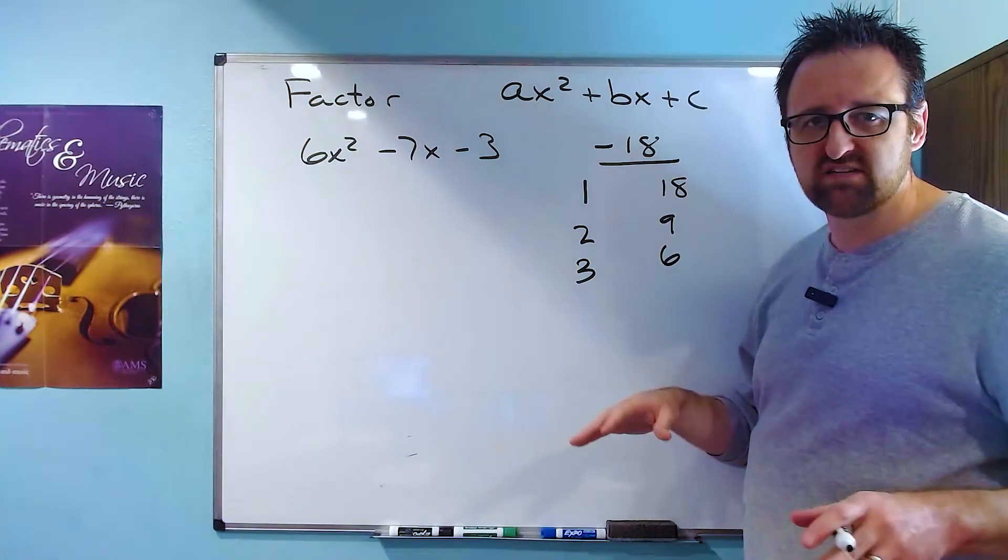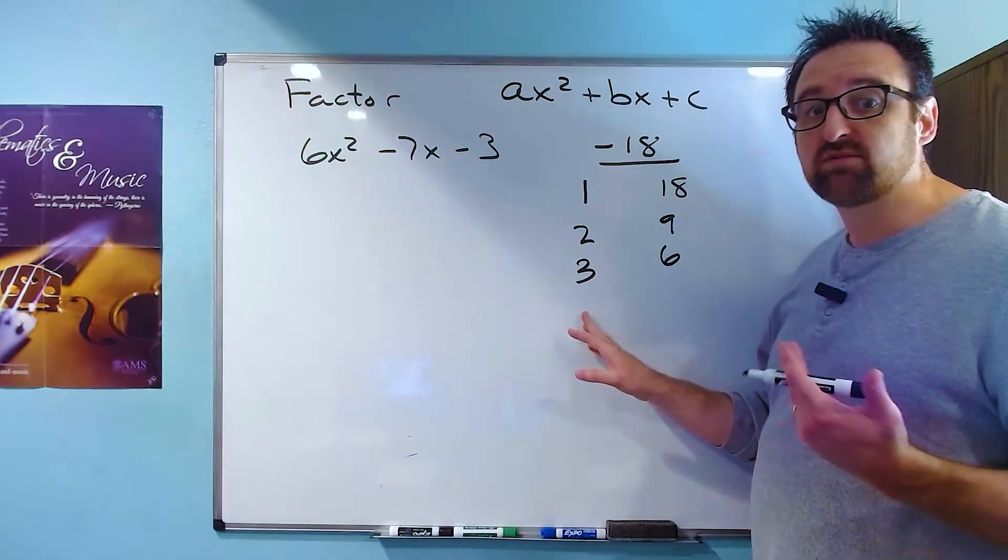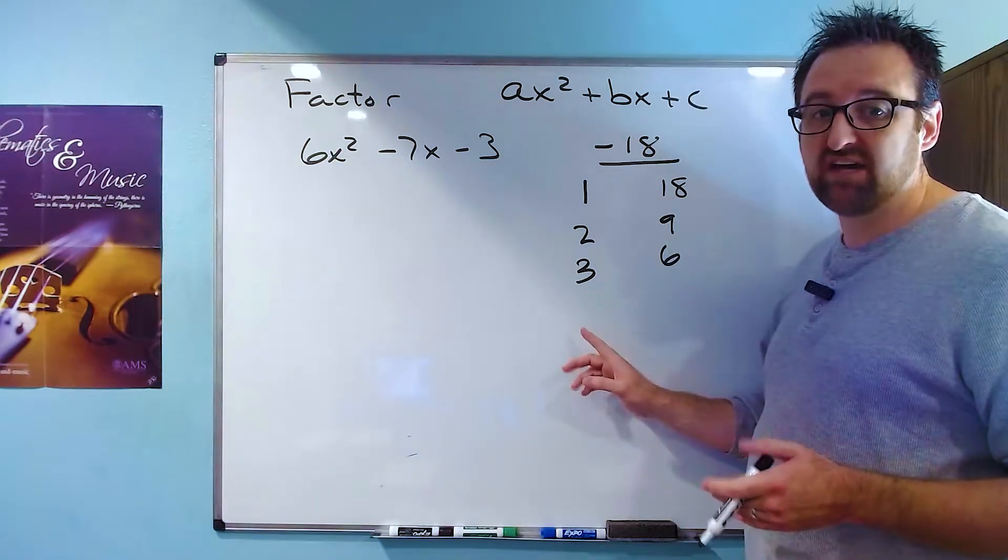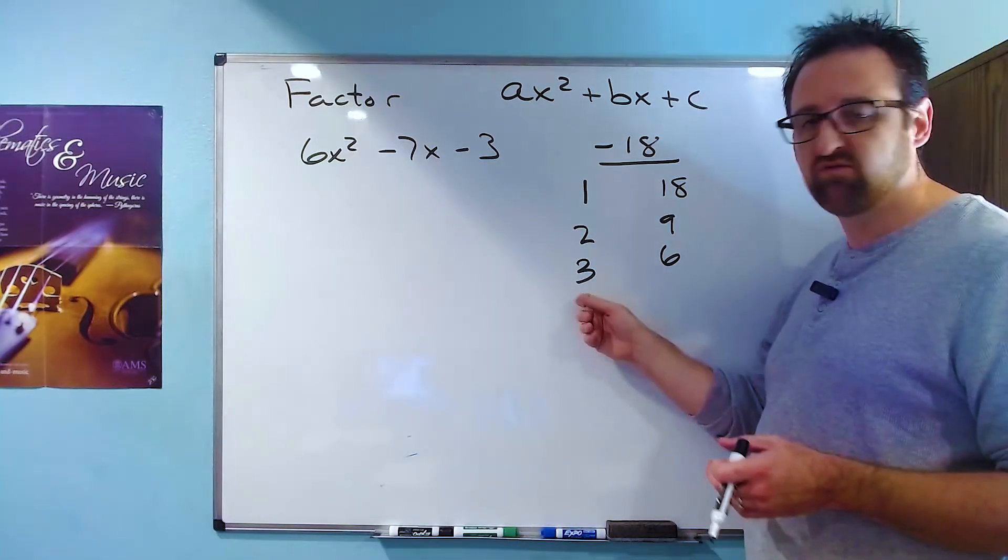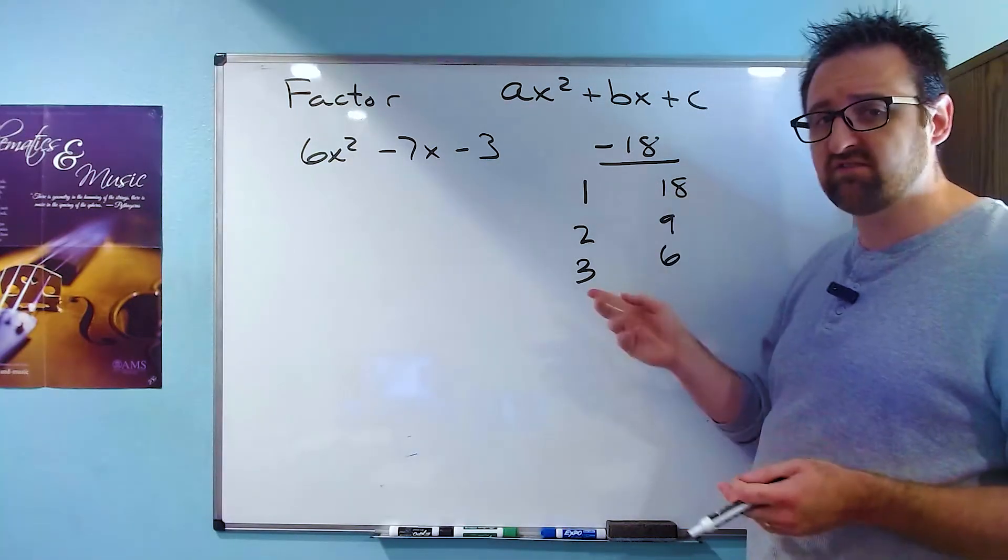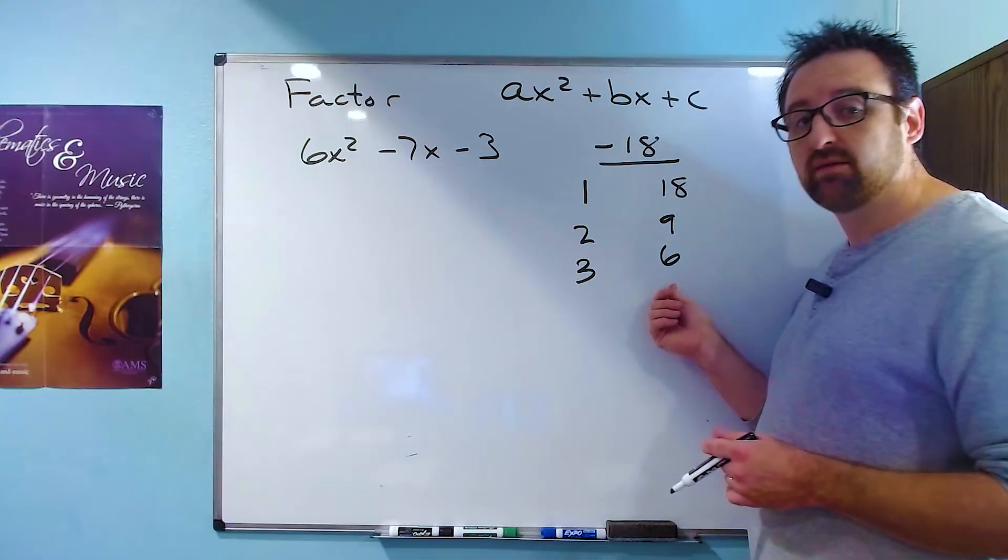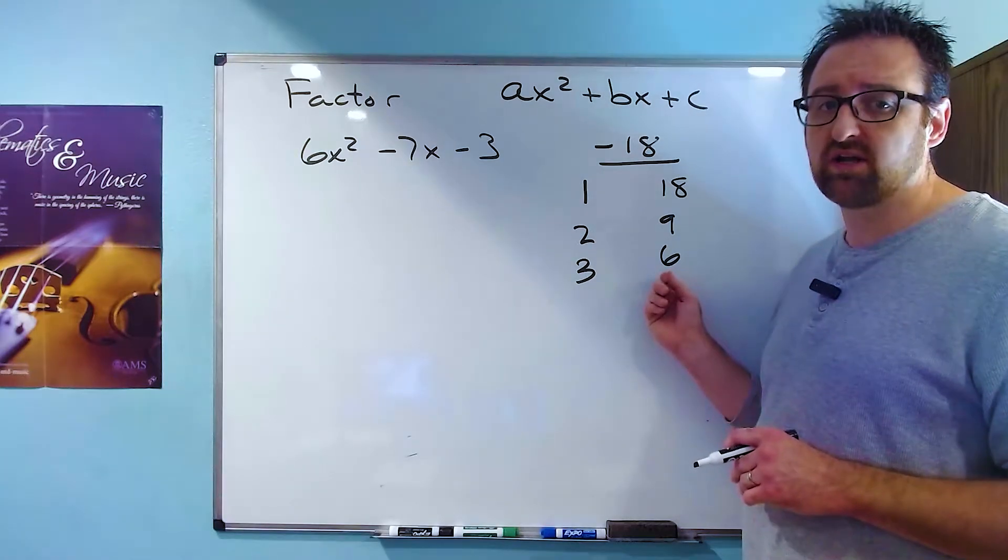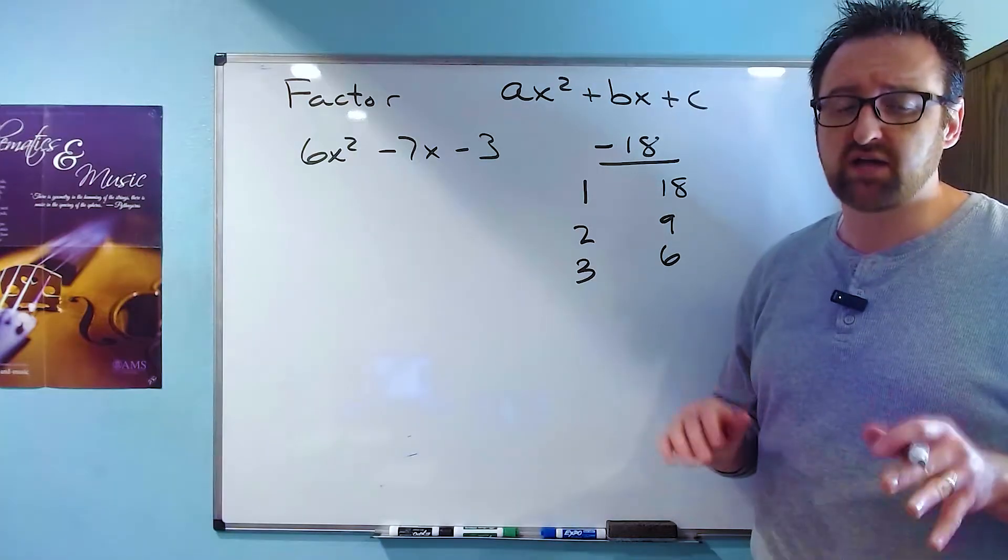Then I could try to do four, but 18 divided by four doesn't divide evenly. So I don't write four here because it's not a factor. Then I could count up to five and 18 divided by five also doesn't go in evenly. And so five's not a factor. So four and five, I don't need to list because they're not factors of 18. The next number that I should try is six, but six is already on the board.